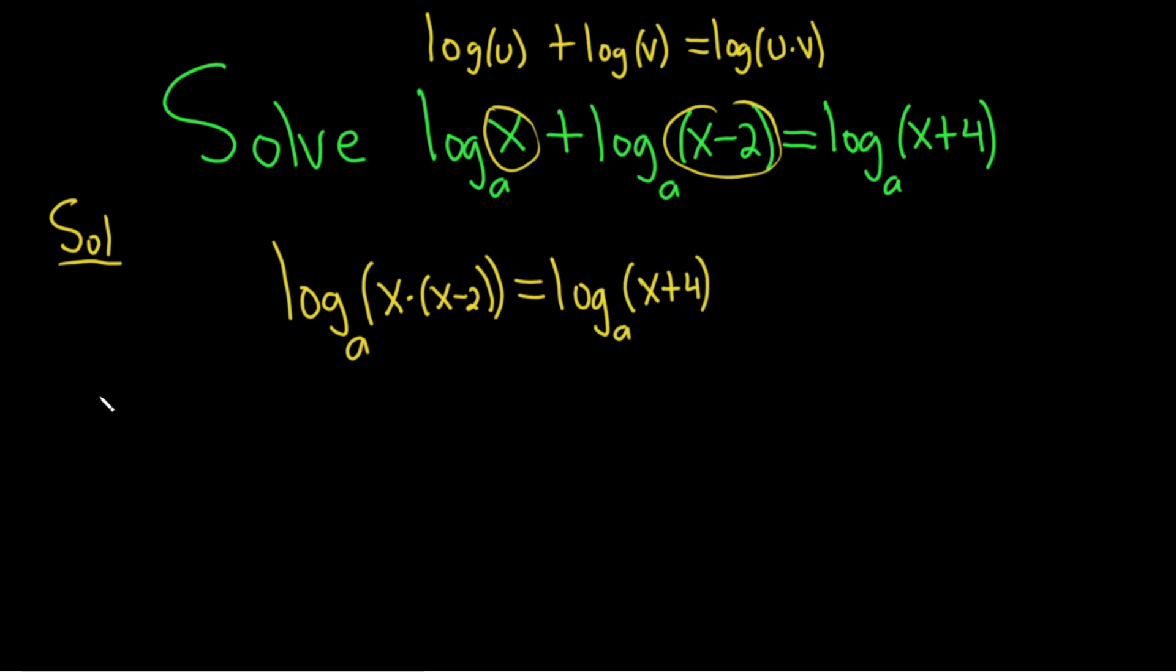Now we need to get rid of the log, so what we can do is exponentiate. Recall if you have b to the log base b of x, that's just equal to x because the bases are the same. Here the base is a, so we'll exponentiate by putting an a here and putting an a here. Just like they cancel in the formula, they will cancel in our problem. So we have x times x minus two, and that equals x plus four.